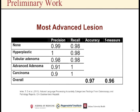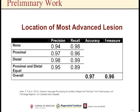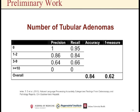Preliminary work published in Clinical Gastroenterology and Hepatology showed an accuracy of 97% for the most advanced lesion, 97% for the location, and 84% for the number of tubular adenomas — all the requirements in order to generate a colonoscopy surveillance recommendation.